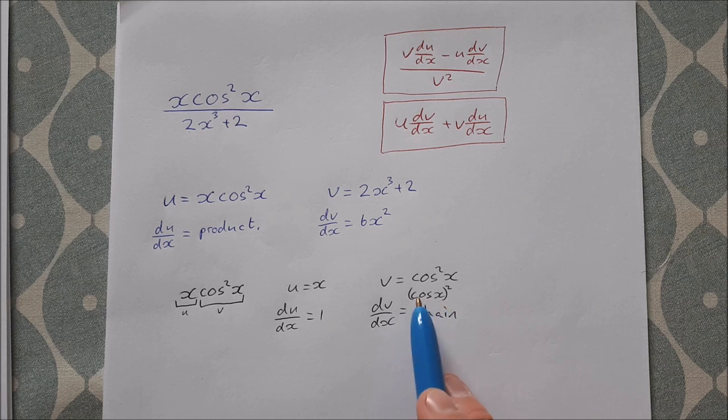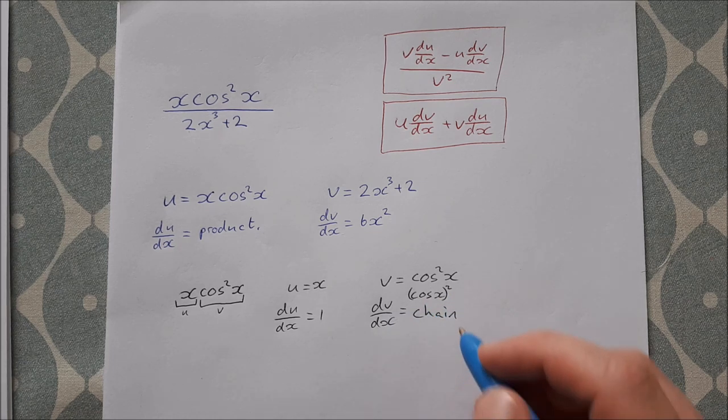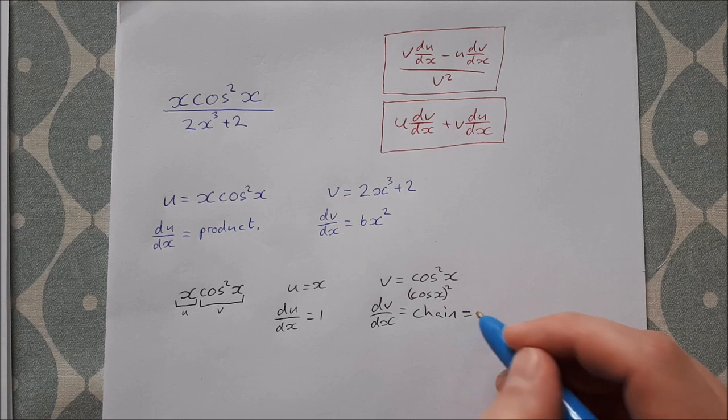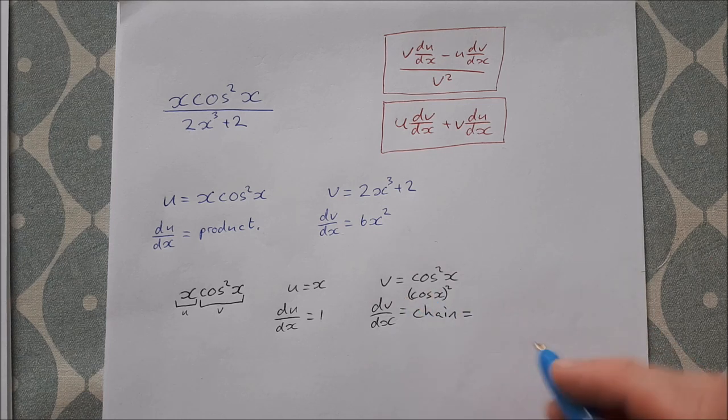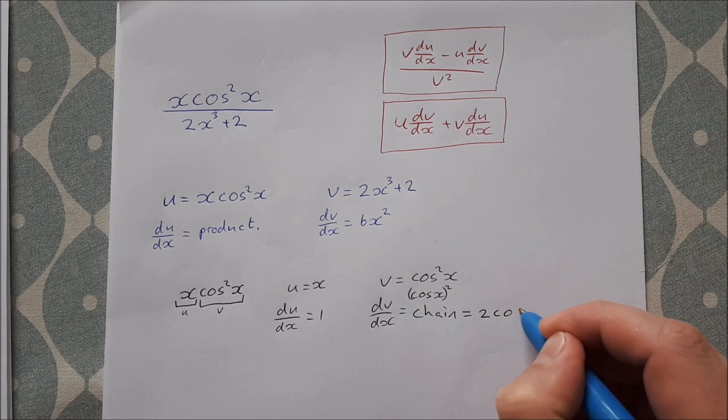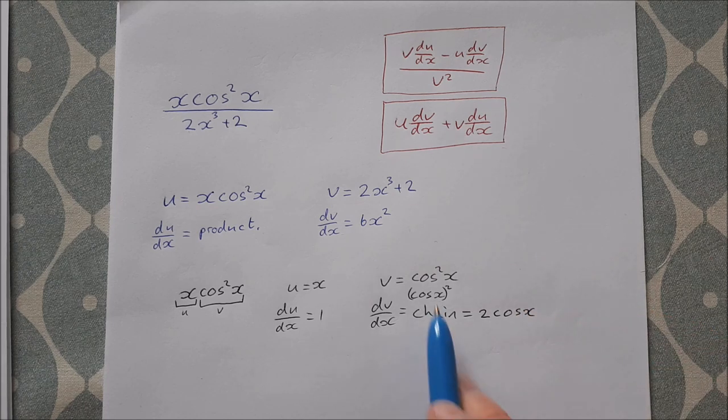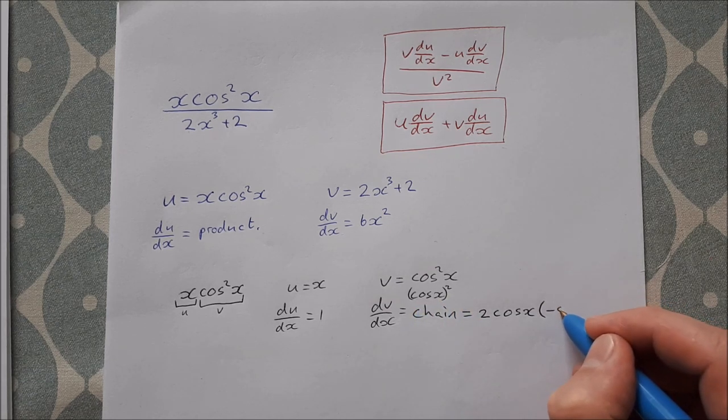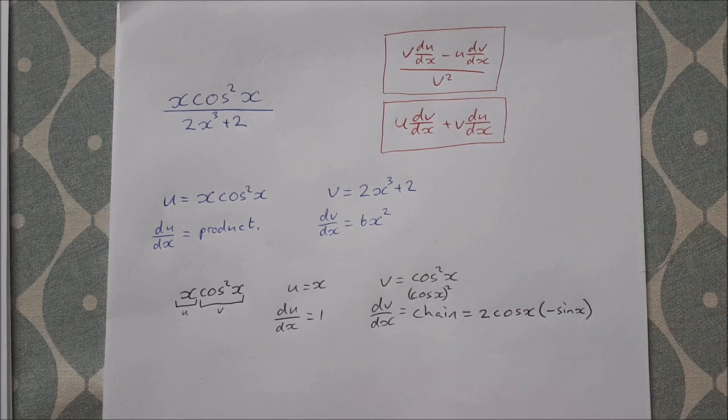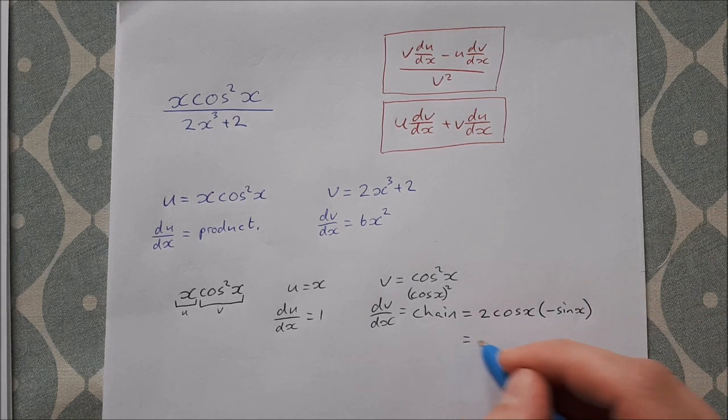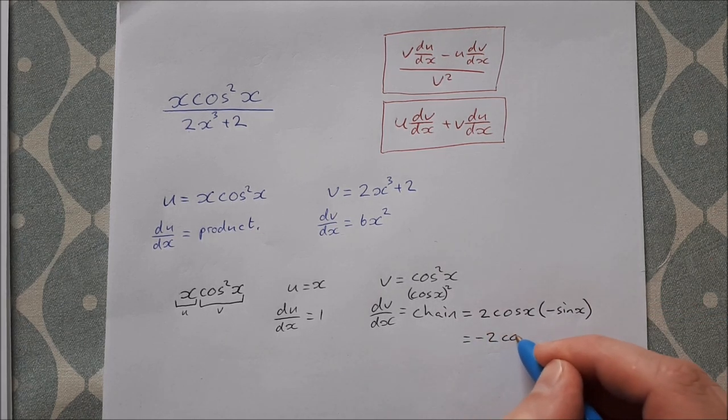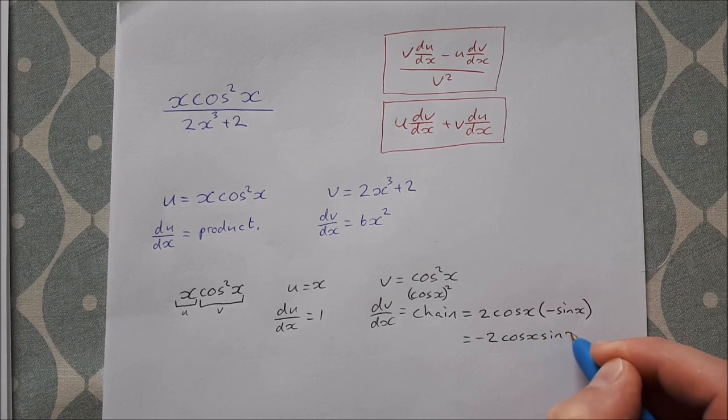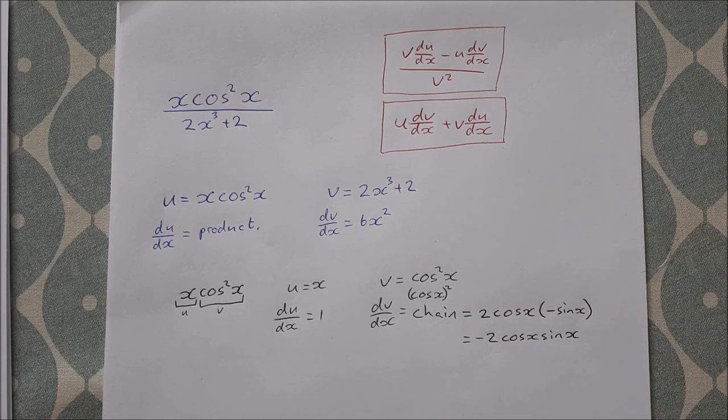So we need to differentiate this cos²x. To differentiate cos²x, we bring down the 2, so it's 2 cos x, and then you differentiate what's inside the bracket. So that's times the derivative of cos x, which is minus sin x. So that gives us -2 cos x sin x.